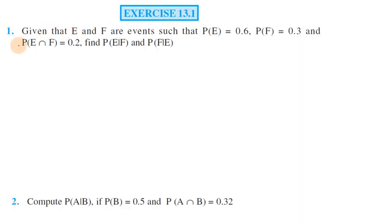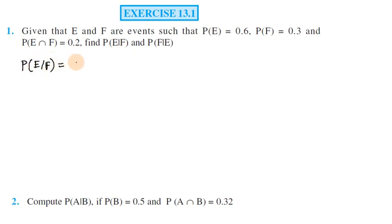Exercise 13.1, Question 1. Given that E and F are two events such that P(E) = 0.6, P(F) = 0.3, P(E∩F) = 0.2. Find P(E|F). So P(E given F) — the formula we know is P(E∩F) divided by P(F).